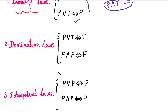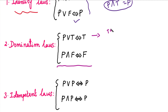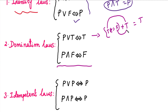Next is the domination law. That is: P OR T is equivalent to T, and P AND F is equivalent to F. In this case, the statement P may be true or false — there are two values. The symbol here is OR. Whatever value P takes, when you OR it with T, since T has value 1, the answer is always T.